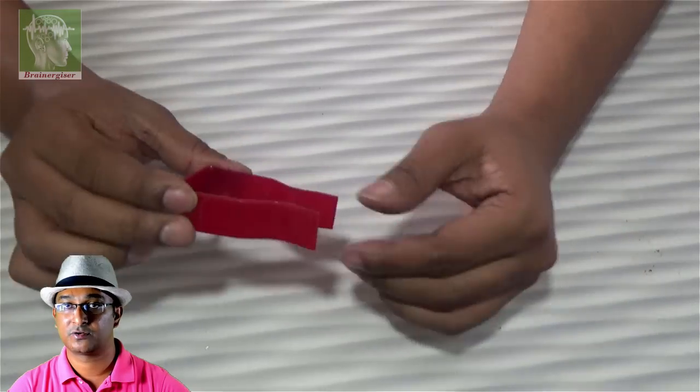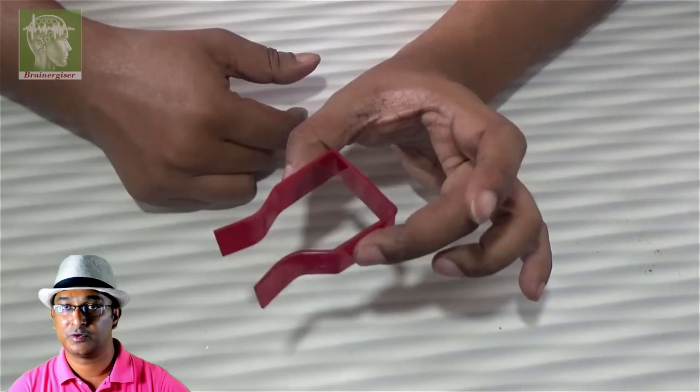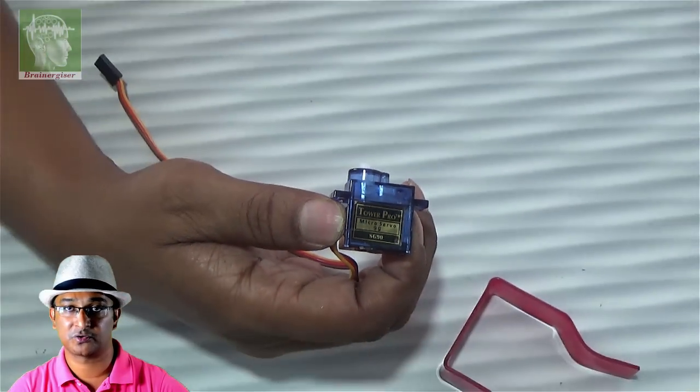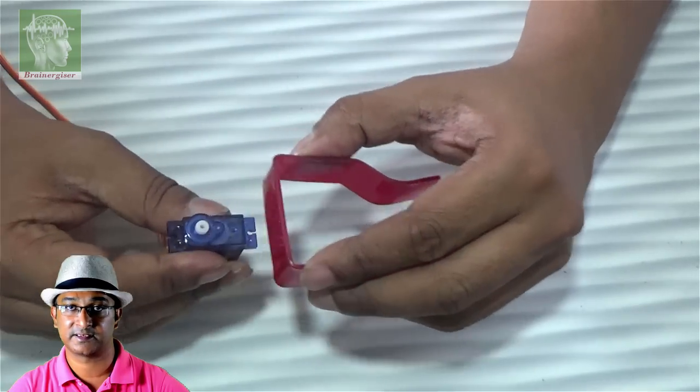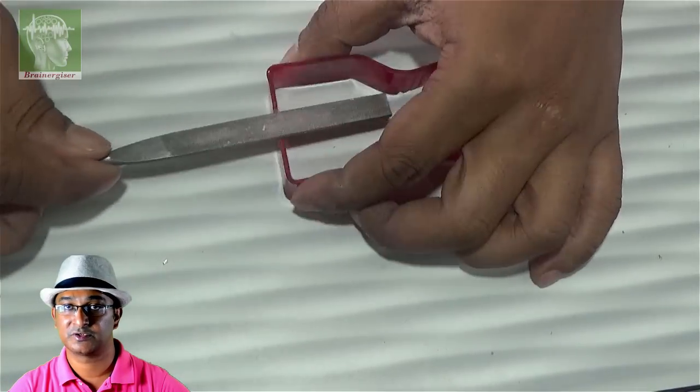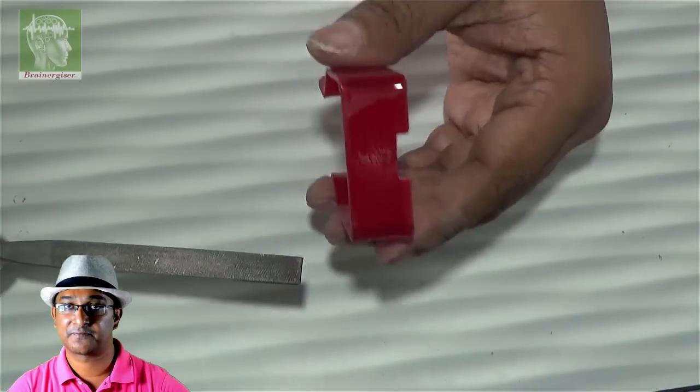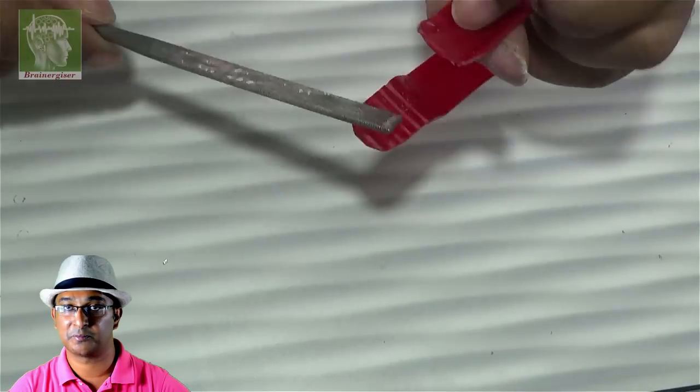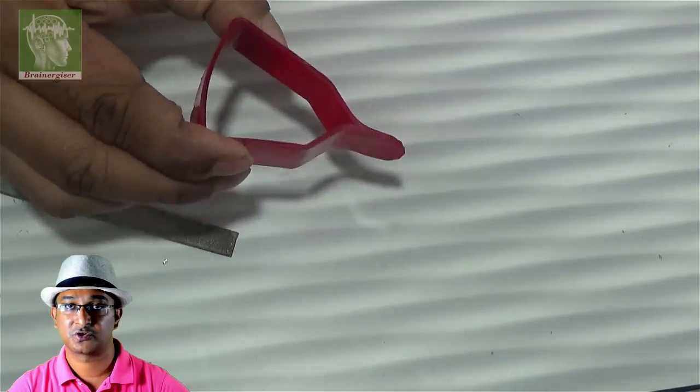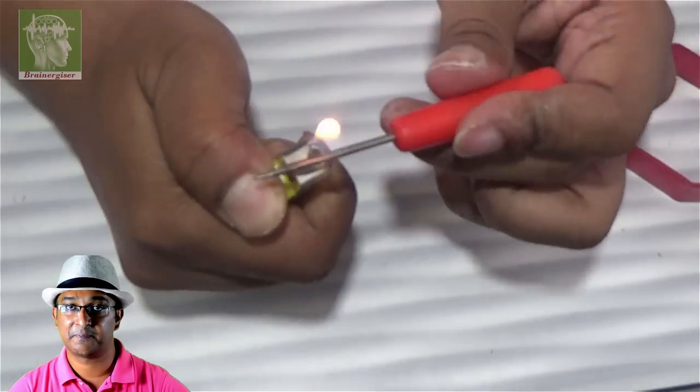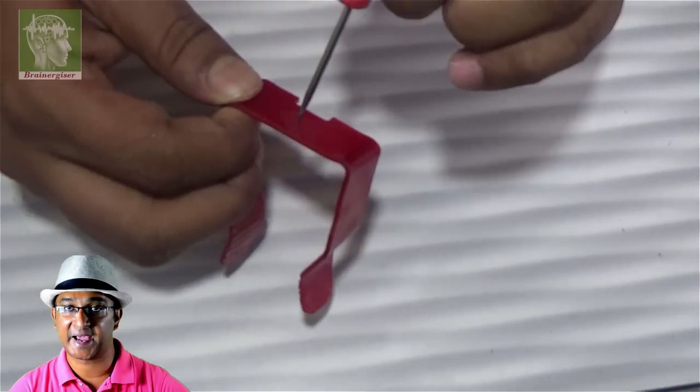Now this is the gripper we will be controlling with this servo motor, the micro servo motor which will place there. For that I'm going to make a groove using a file. Also at the front area I'll make some rough marks to make the area rough so that it can easily hold. Now heat up a pin and make a hole at the back.